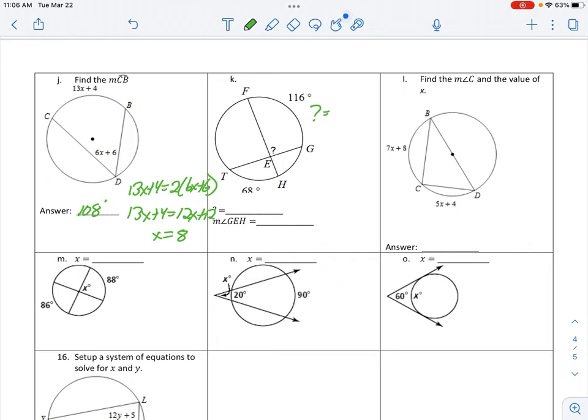Question mark inside the circle. One half of 116 plus 68. One half of that is 92 degrees for the question mark. GEH is a linear pair with that. So 180 minus 92 gives me 88 degrees.